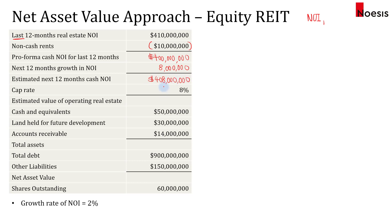To find the estimated value of the operating real estate, we take the net operating income for the coming year and divide by the cap rate. Dividing 408 million by 8% gives us $5.1 billion.